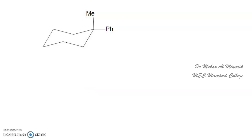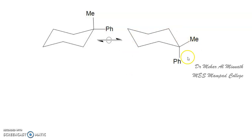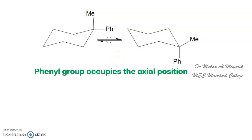Now we have another example: methyl and phenyl groups as substituents. I have written methyl in the axial position and phenyl in the equatorial position. When you flip it, phenyl goes to the axial position and methyl goes to the equatorial position. We would expect phenyl to be in the equatorial position because phenyl is bulkier than methyl. However, it has been observed that the phenyl group actually prefers to occupy the axial position — so we need to understand why.